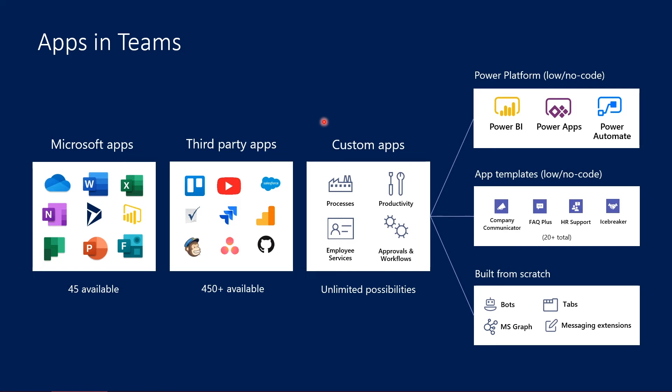And there are custom applications an organization could develop — unlimited possibilities doing processes, productivity, employee services, approvals, and workflows. How are these custom applications built? You can use the Microsoft Power platform. These are low-code, no-code solutions using the Power tools we have: Power BI for dashboarding capabilities, Power Apps for drag-and-drop application building for the enterprise, and Power Automate to automate workflows in the environment. You respond to an event, something needs to happen — notifications and so on — and you can automate this with Power Automate.